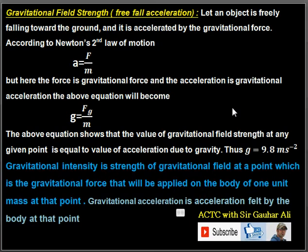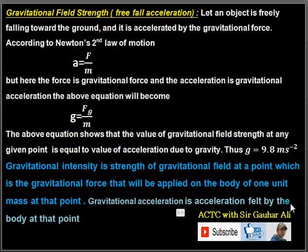Gravitational field intensity is the strength of the gravitational field at a point, which is the gravitational force applied on a body of one unit mass at that point. Gravitational field strength, gravitational intensity, and gravitational acceleration are equivalent terms. The gravitational acceleration is the acceleration felt by a body at that point due to the gravitational field acting on it.